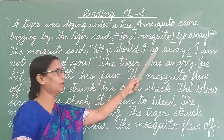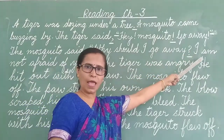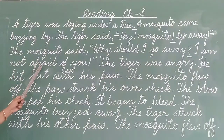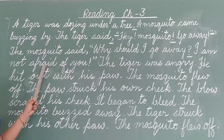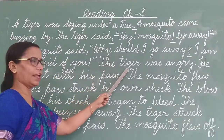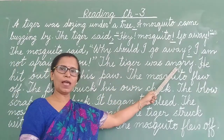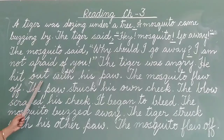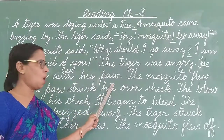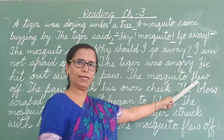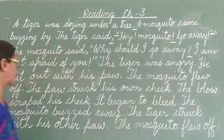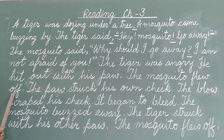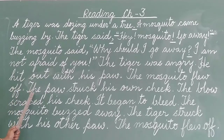Why should I go away? I am not A-F-R-A-I-D — afraid — of you. The tiger was A-N-G-R-Y — angry. He hit out with his P-A-W — paw. The mosquito F-L-E-W — flew — off. O-double-F — off. We put stress on the double F: 'off,' not 'of.'